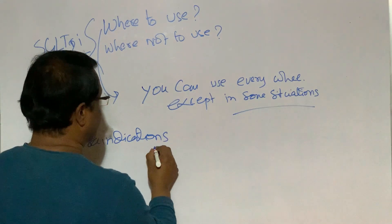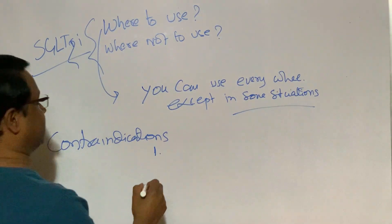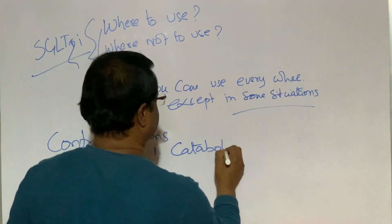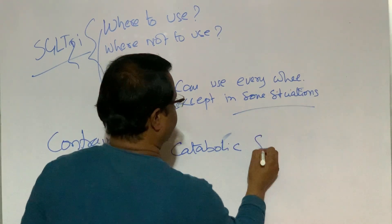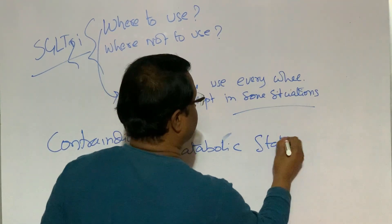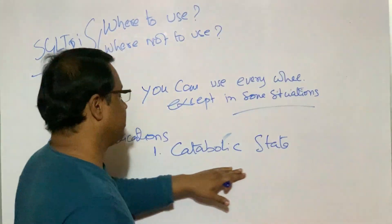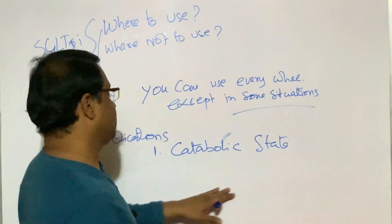And what are the situations? If we know where we can't use, we are not permitted to use this medicine, then everything is very clear. The contraindication: number one, catabolic state. In any catabolic state of body, this drug is contraindicated.